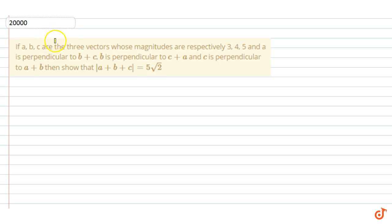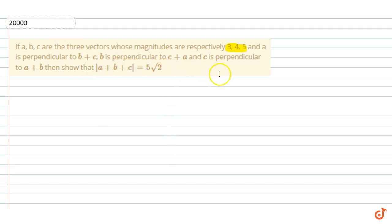If A, B, C are 3 vectors whose magnitudes are respectively 3, 4, and 5, and A is perpendicular to B plus C, B is perpendicular to C plus A, and C is perpendicular to A plus B, then show that the magnitude of A plus B plus C is equal to 5 root 2.